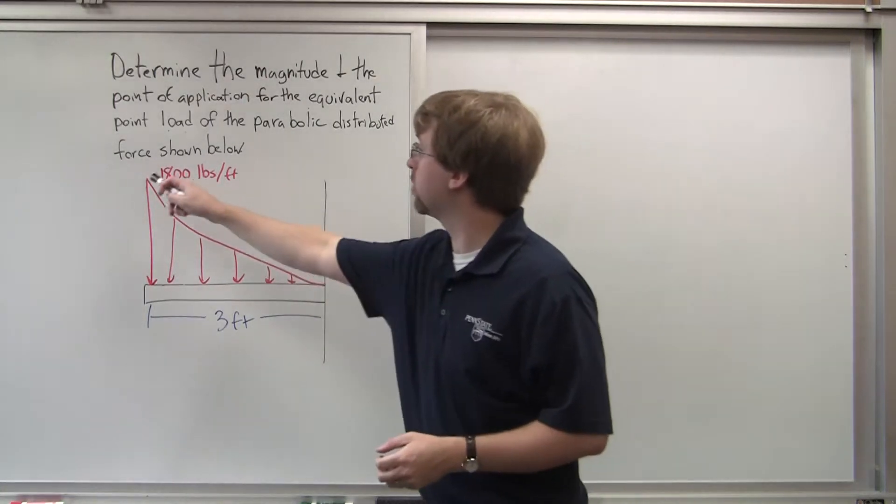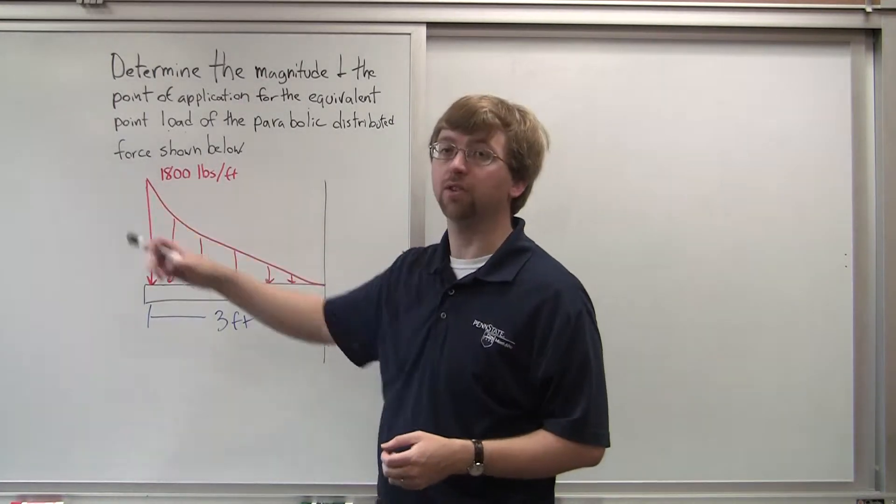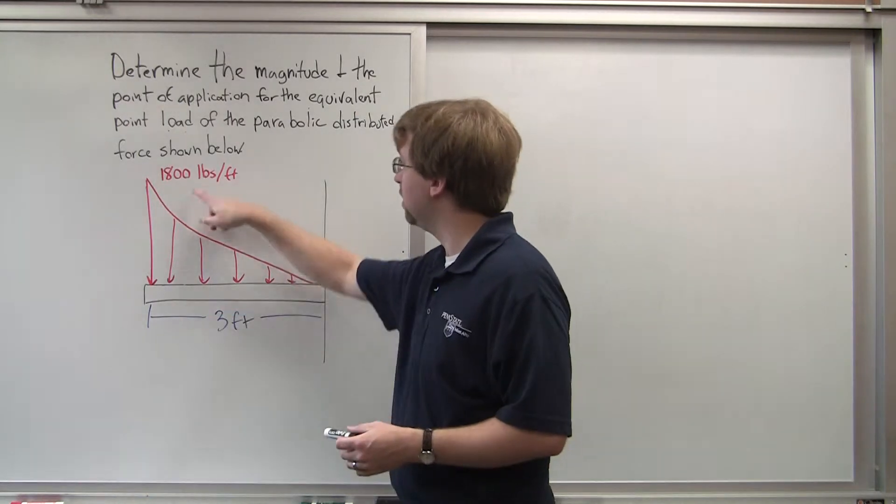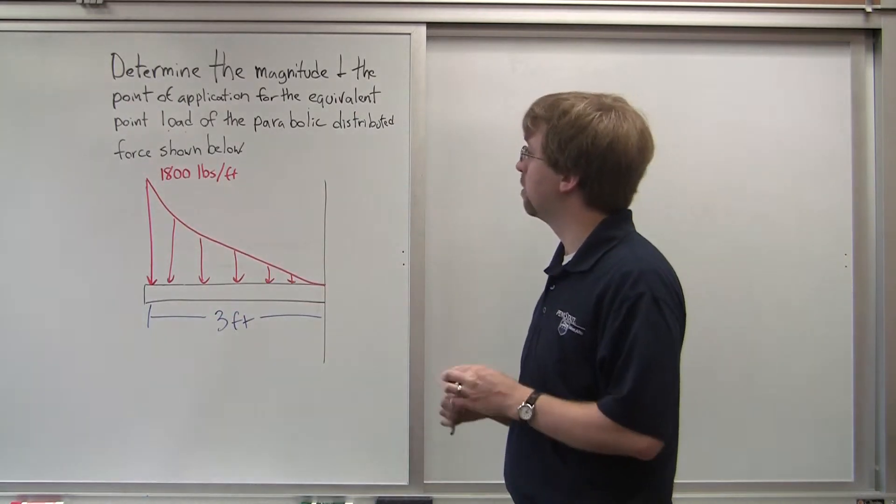So this is a parabolic curve, which means it's something times x squared. And we know out at 3 feet, it's 1800 pounds per foot.